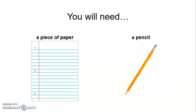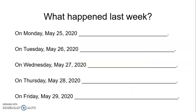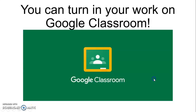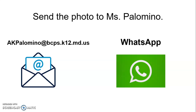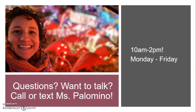So for this activity, you will need a piece of paper and a pencil. I quiero saber what happened last week: ¿Qué pasó on Monday? ¿Qué pasó on Tuesday? ¿Qué pasó on Wednesday? ¿Qué pasó on Thursday? ¿Y qué pasó on Friday? You can turn in your work on Google Classroom, or you can take a photo of your work and send it to Ms. Palomino by email or by WhatsApp. And if you have questions or want to talk, you can call or text me.